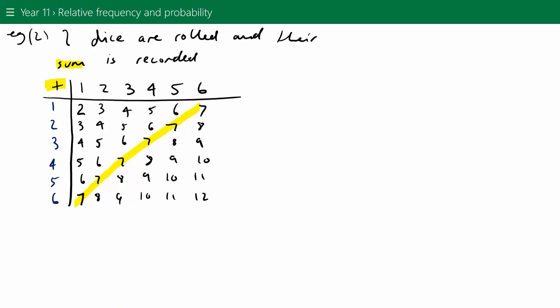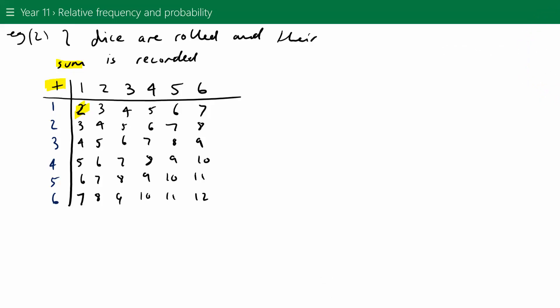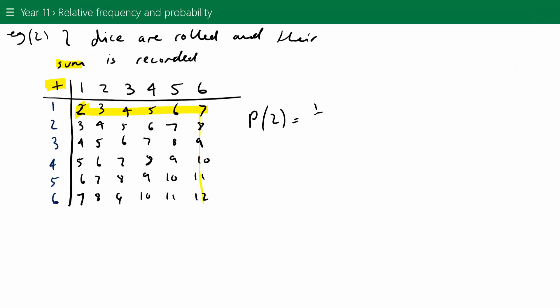A common question is: what's the probability of the sum of two dice equalling two? How many twos are in this table? There's only one two — you have to roll two ones to add up to two. So the probability of rolling a sum of two equals one out of 36, since there are six by six equals 36 outcomes. This probability topic will come in a later video.